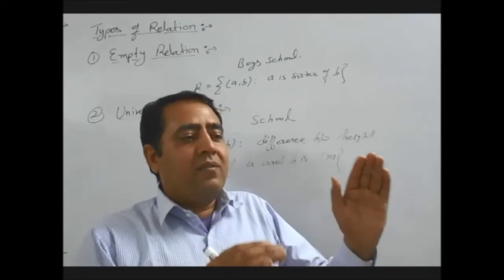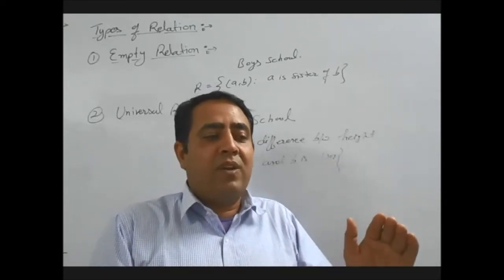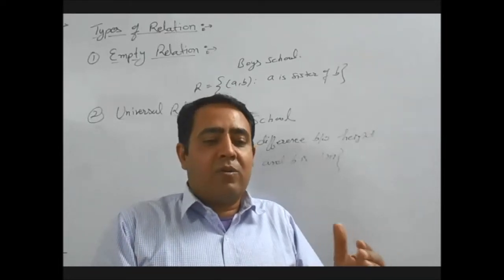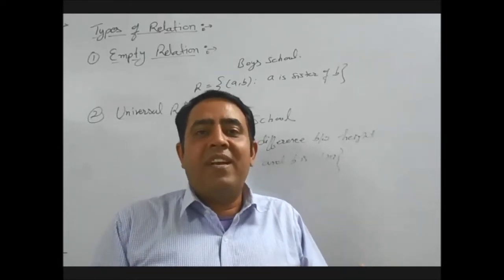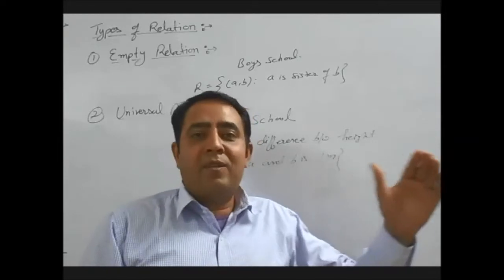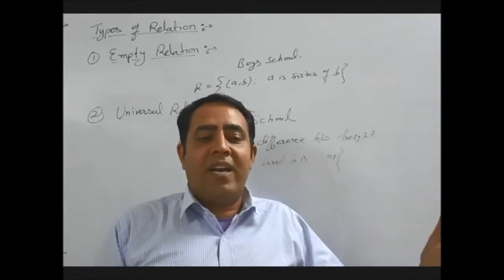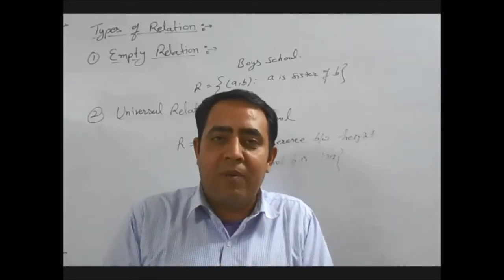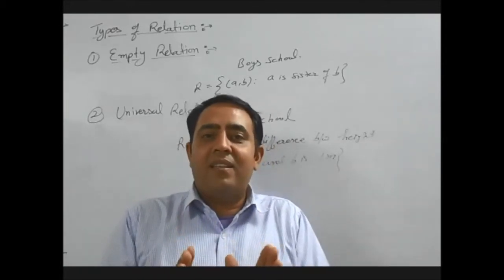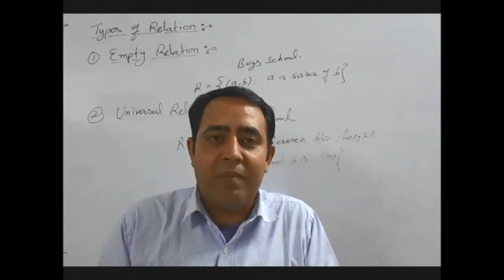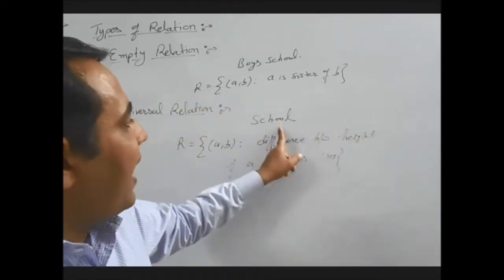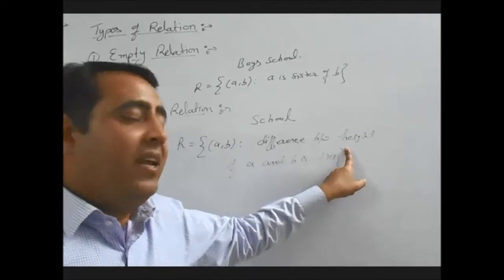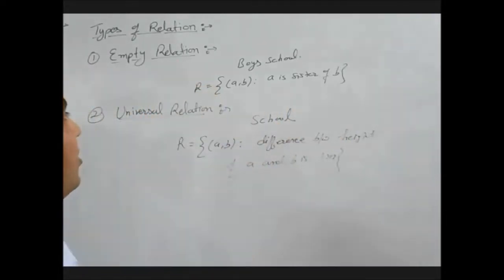The minimum height of any student will be around two to three feet, and the maximum height we find is six, seven, or eight feet. Even then, if we find the difference between these two, we see that the height difference is not more than one meter. So every element of set A is related to every element of set A. That type of relation is known as universal relation.